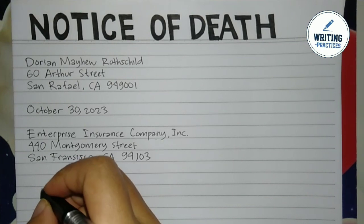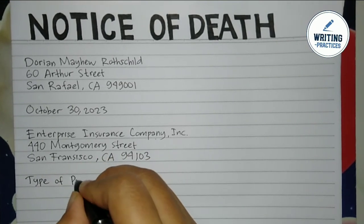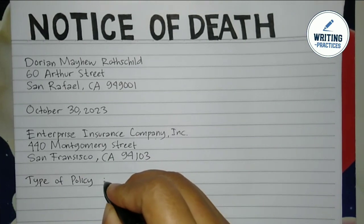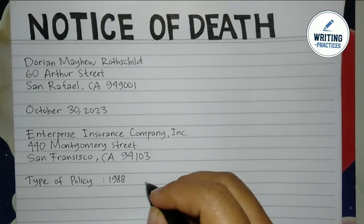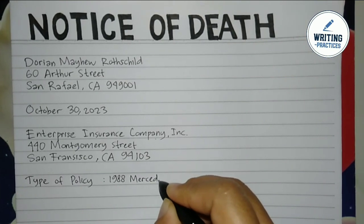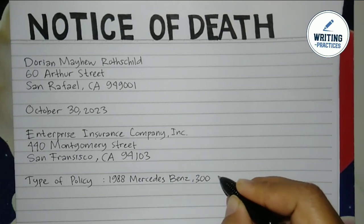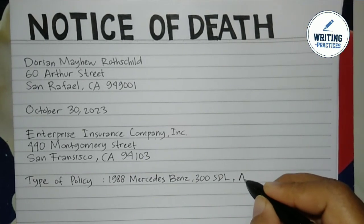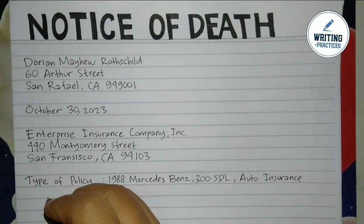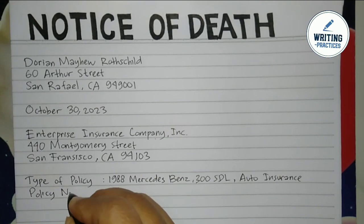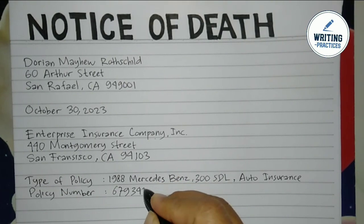Now write the details of the insurance that the person who passed away registered. You must write the type of the policy. Since this is about car insurance, you must type the model of the car. In this example it is a Mercedes-Benz, year 1988, with 300 SDL. Also write the type of insurance, which is auto insurance. Each insurance company has its own type of policy, so you just have to check it. Then write the policy number.